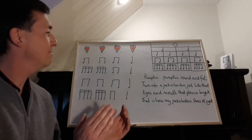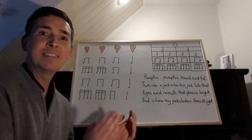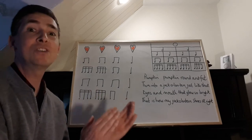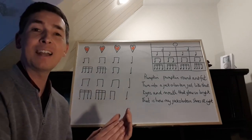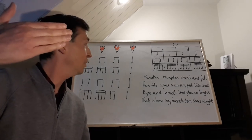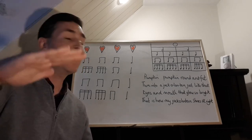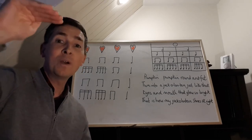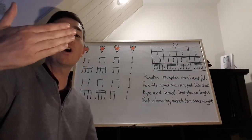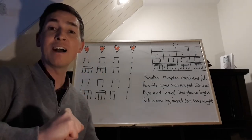Pumpkin, pumpkin, round and fat, turn into a jack-o'-lantern just like that, eyes and mouth that glow so bright, that is how my jack-o'-lantern shines at night. And we'll sing it one last time — after four — pumpkin, pumpkin, round and fat, turn into a jack-o'-lantern just like that, eyes and mouth that glow so bright, that is how my jack-o'-lantern shines at night.